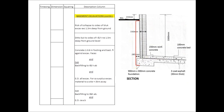Next we move on to the risk of collapse. As per the standard system, risk of collapse is measured as either not exceeding 1.5 meters or exceeding 1.5 meters. In this case our excavation depth exceeds 1.5 meters, so we measure it as exceeding 1.5 meters. Risk of collapse is measured in square meters to the sides of our excavation using the outer perimeter. We took 7.8 multiplied by 2 to get 15.6, and 5.4 multiplied by 2 to get 10.8, adding up to a perimeter of 26.4 meters.